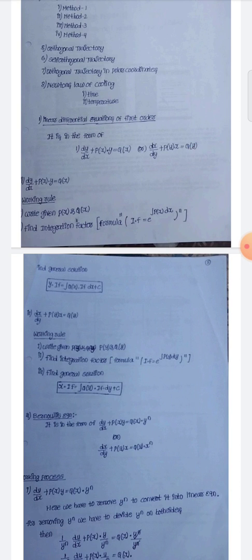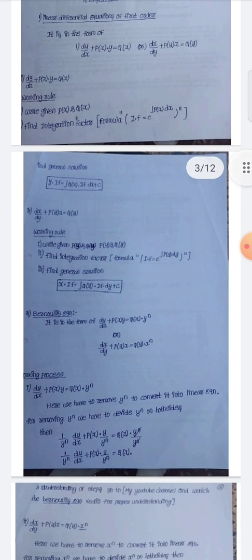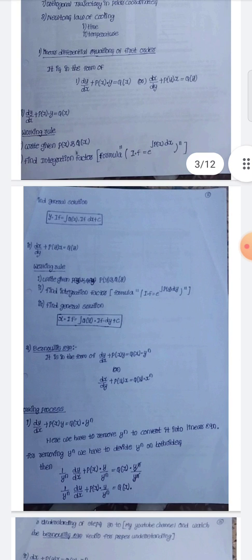For the form dx/dy + P(y)·x = Q(y), first we find P(y) and Q(y). Then the integration factor is e raised to the power of integration of P(y) dy. The general solution is: x × (integration factor) = integration of Q(y) × (integration factor) dy + C.